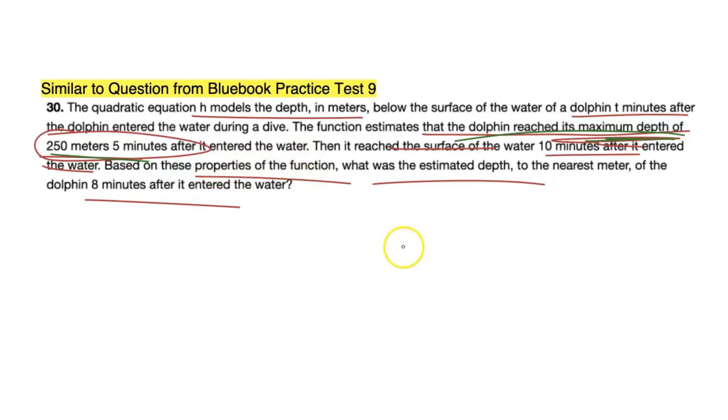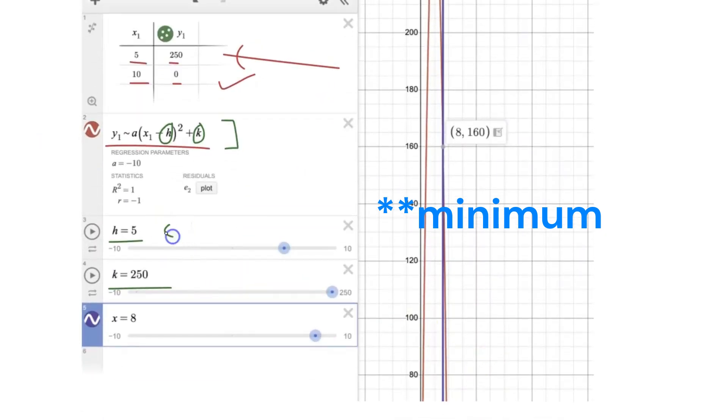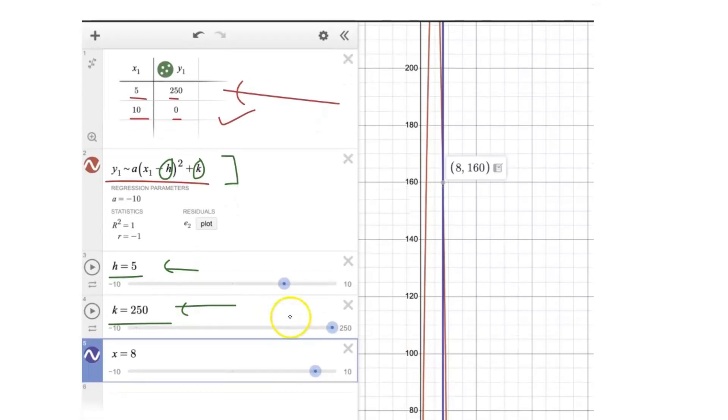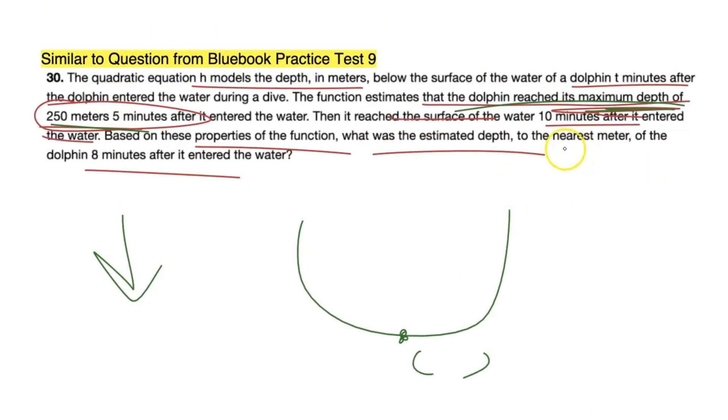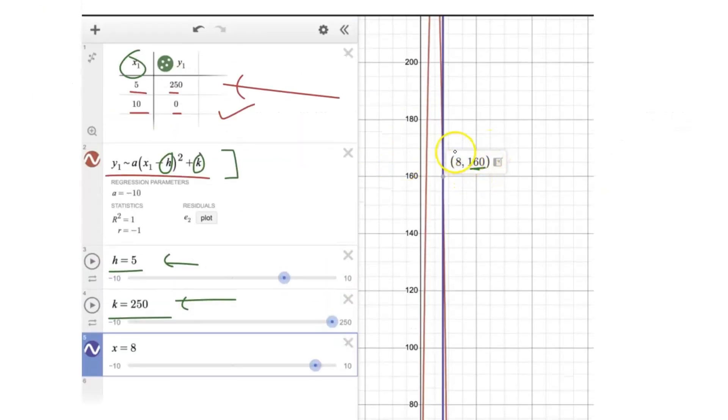And the one thing we do have to do here is actually set a restriction on this regression where we say h equals 5 and k equals 250. We're giving a value for h, we're giving a value for k here. And the reason we're doing that is because we know it's the vertex because the dolphin reached the maximum depth 250 meters 5 minutes after it entered the water. So the maximum point of our parabola there is our vertex. And so because we set these restrictions now, we have a proper regression. Now we can simply just find the intersection where x equals 8. Because x, in our case here, is just the number of minutes. And so our corresponding y value is the nearest meter that the dolphin is actually at. So 8 minutes in, the dolphin is at 160 meters.